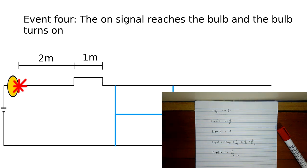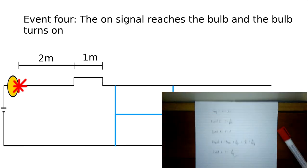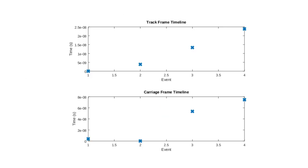Event 4 must occur at 3 divided by c minus beta c, or approximately 7.5 times 10 to the negative 8 seconds. So, even though the on signal leaves before the off signal, the off signal arrives first, so the bulb turns off for a time, and then event 4 occurs, and the bulb turns on again.